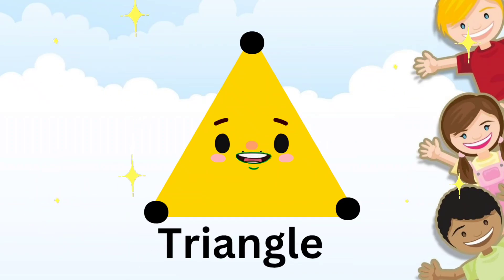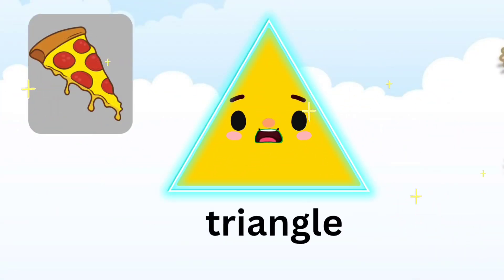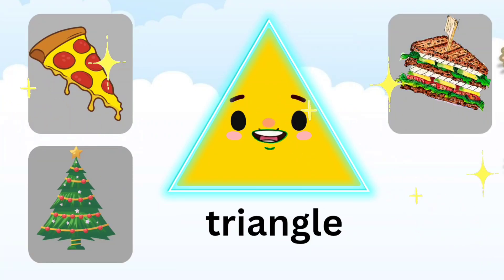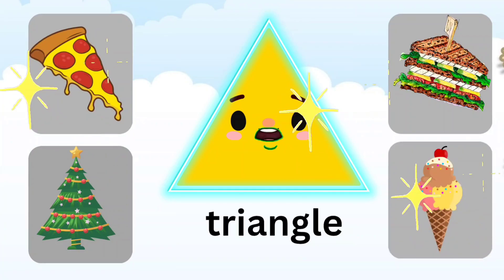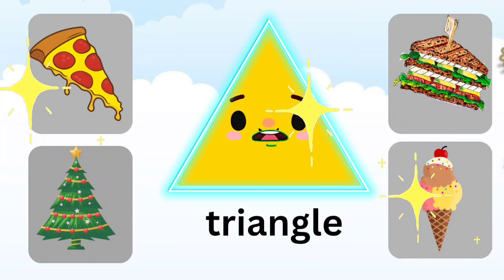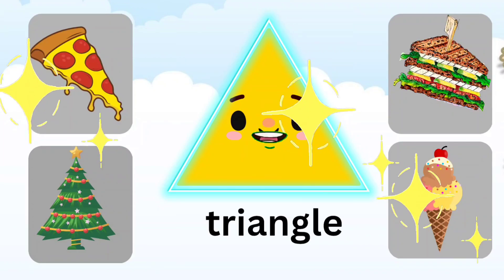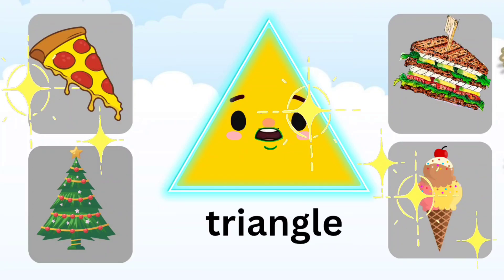You can find me everywhere around your surroundings. You can eat me as a pizza slice. You can decorate me as a Christmas tree. You can relish me as a sandwich. You can eat me as an ice cream cone. All these objects can be present in the shape of a triangle.